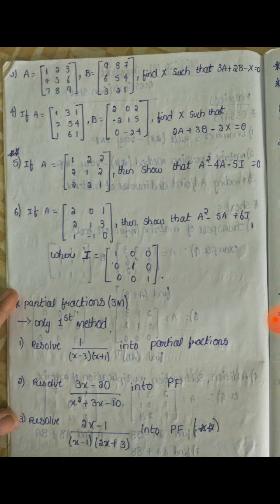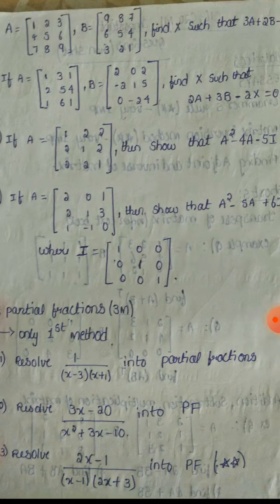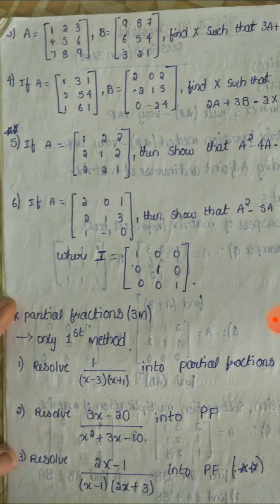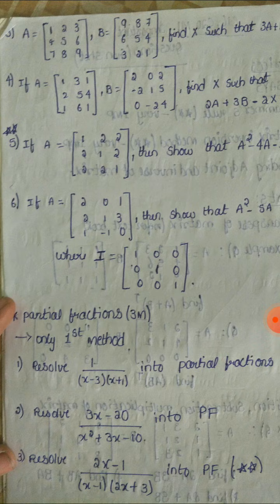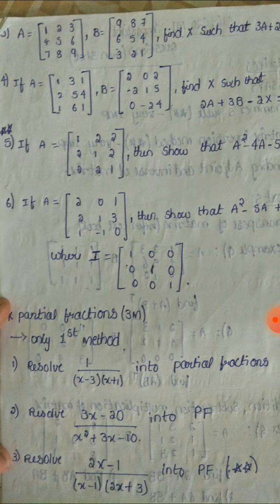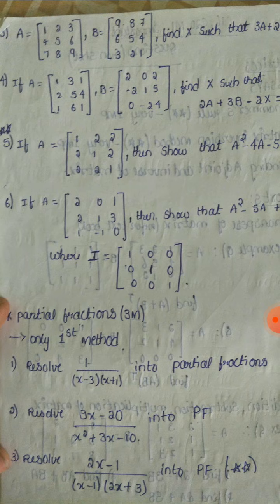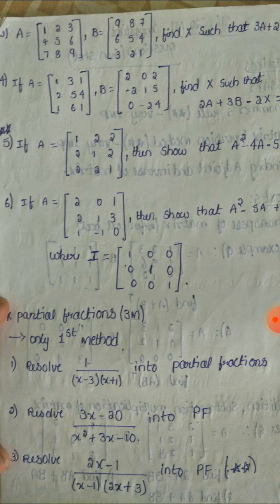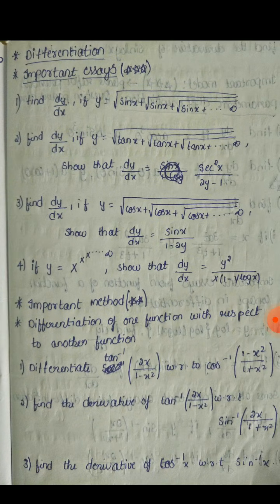Partial fractions — only the first method is important. Among the questions, one example is: resolve (2x minus 1) divided by (x minus 1)(2x plus 3) into partial fractions. Questions with two stars mean they are frequently repeated. Prepare this particular model well. Partial fractions, this method is very important.